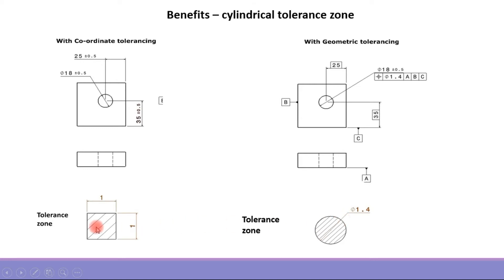You can see that for coordinate tolerancing the tolerance zone is square, and for geometric tolerancing the tolerance zone is a circular tolerance zone.